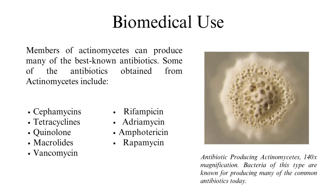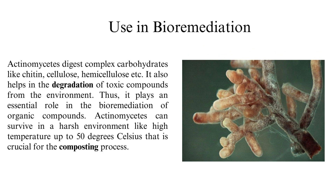Biomedical use: members of actinomycetes can produce many well-known antibiotics. Some of the antibiotics obtained from actinomycetes include cephamycins, tetracyclines, quinolones, macrolides, vancomycin, rifampicin, adriamycin, amphotericin, and rapamycin. The diagram shows antibiotic-producing actinomycetes at 140× magnification. Bacteria of this type are known for producing many of the common antibiotics today.